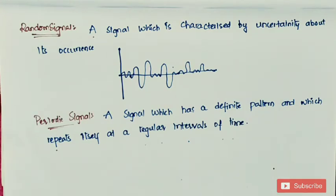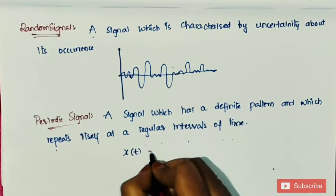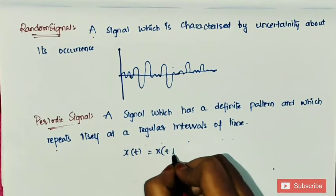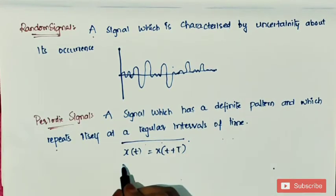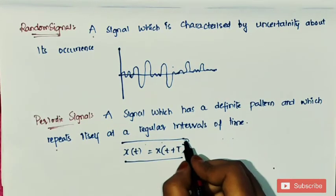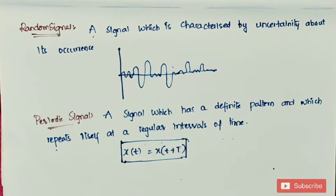A periodic signal has a definite pattern and it repeats itself at a regular interval of time. Mathematically, a periodic signal can be expressed as x(t) = x(t + T). This is the most important equation for a periodic signal. Here x(t) is a continuous time signal, and it is periodic only when it equals x(t + T), where capital T is a constant representing the period.